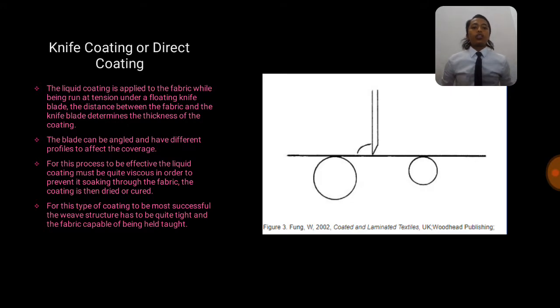Knife coating or direct coating: the liquid coating is applied to the fabric while being run at tension under a floating knife blade. The distance between the fabric and the knife blade determines the thickness of the coating. The blades can be angled with different profiles to affect the coverage. For this process to be effective, the liquid coating must be quite viscous in order to prevent its soaking through the fabric. The coating is then dried or cured. For this type of coating to be more successful, the weave structure has to be quite tight and the fabric capable of being held taut.